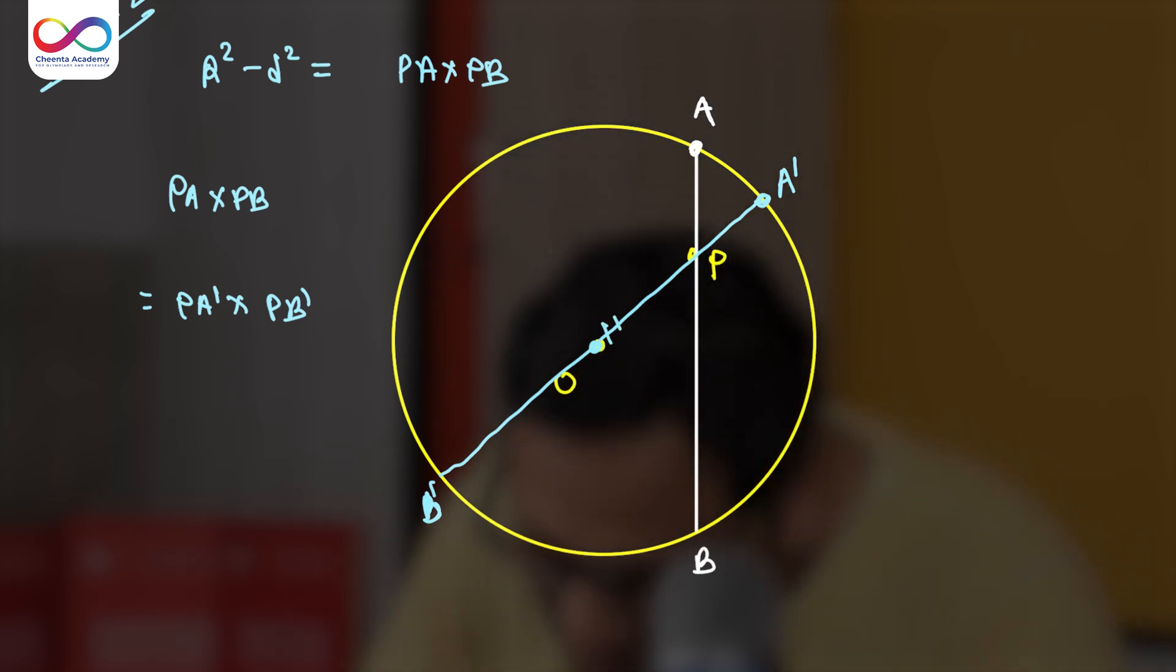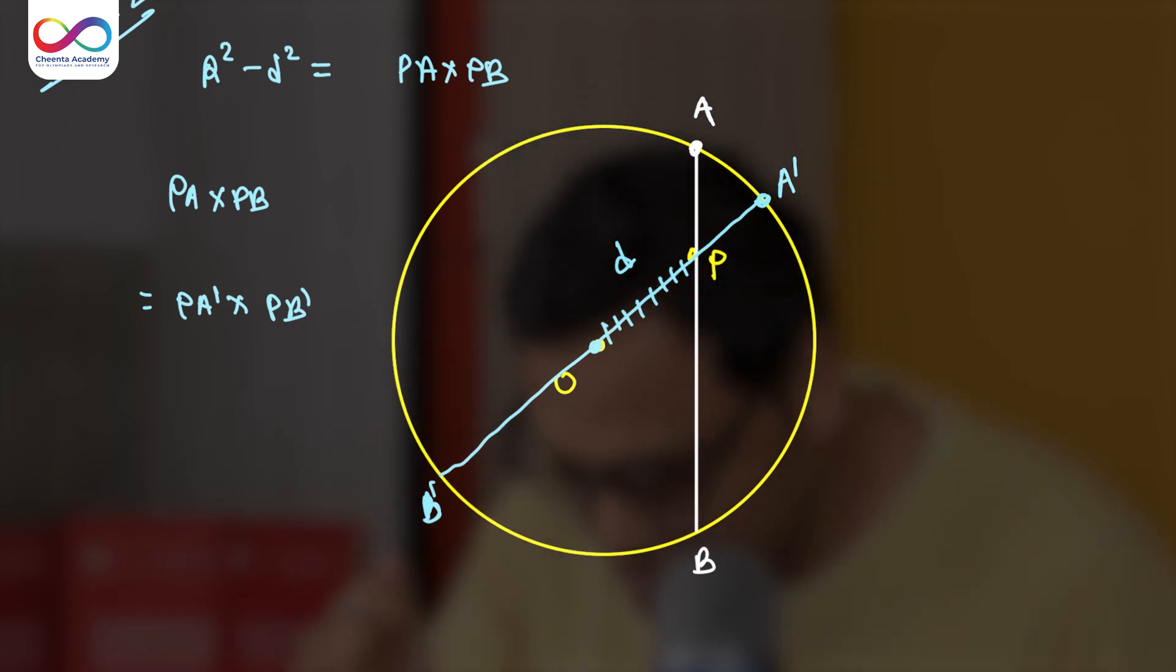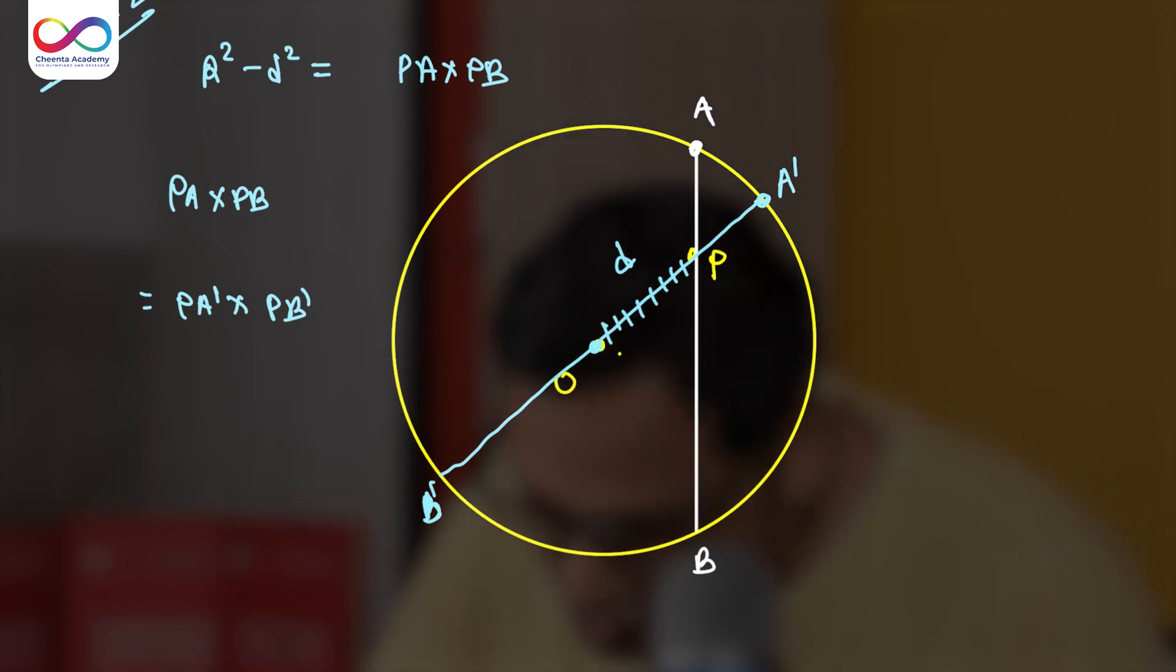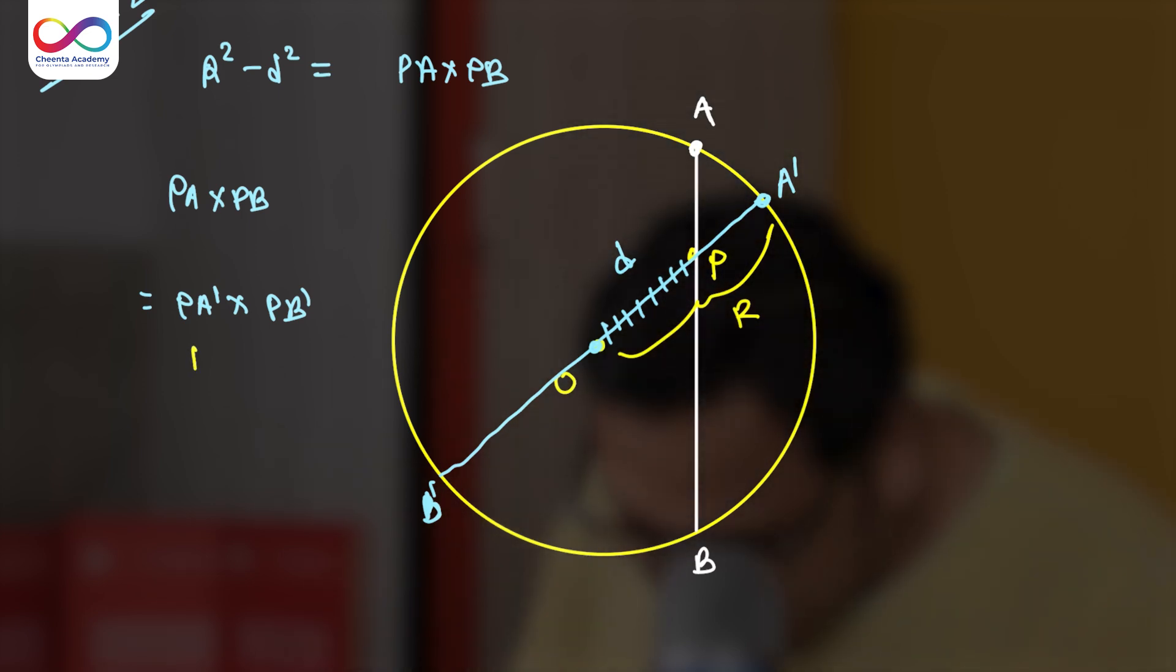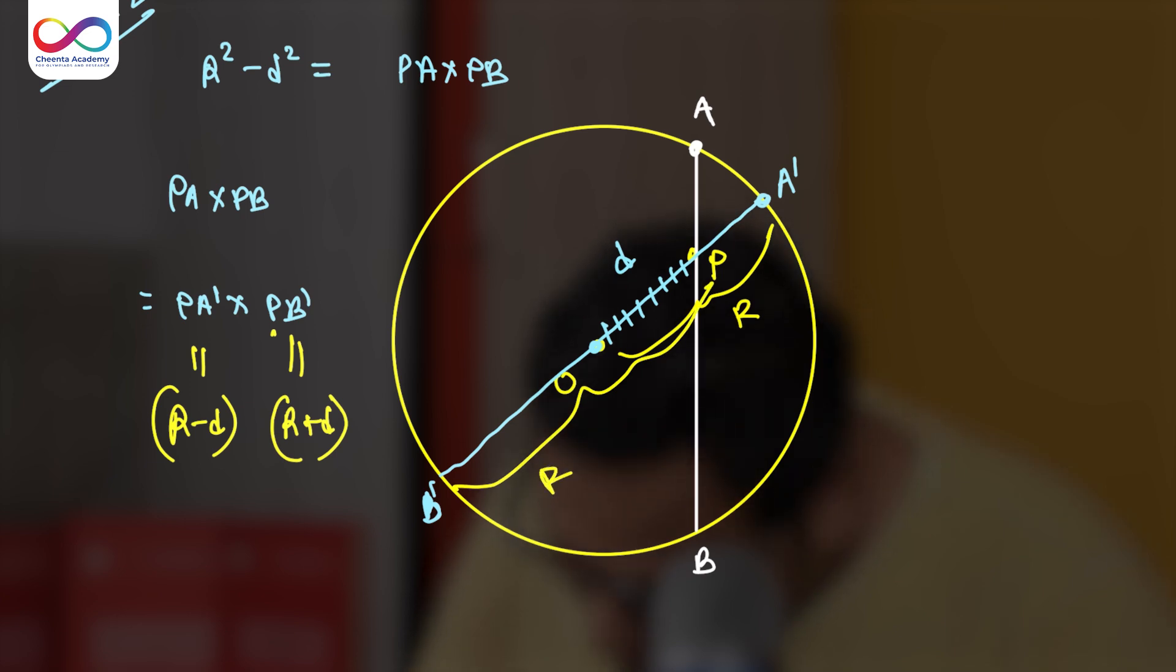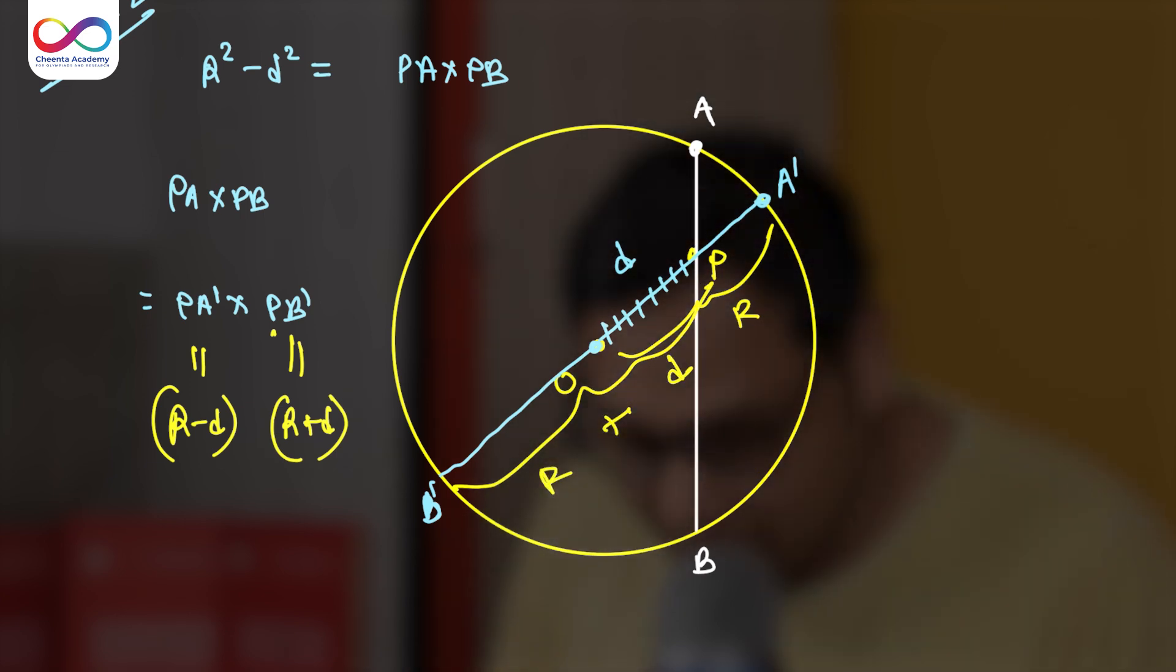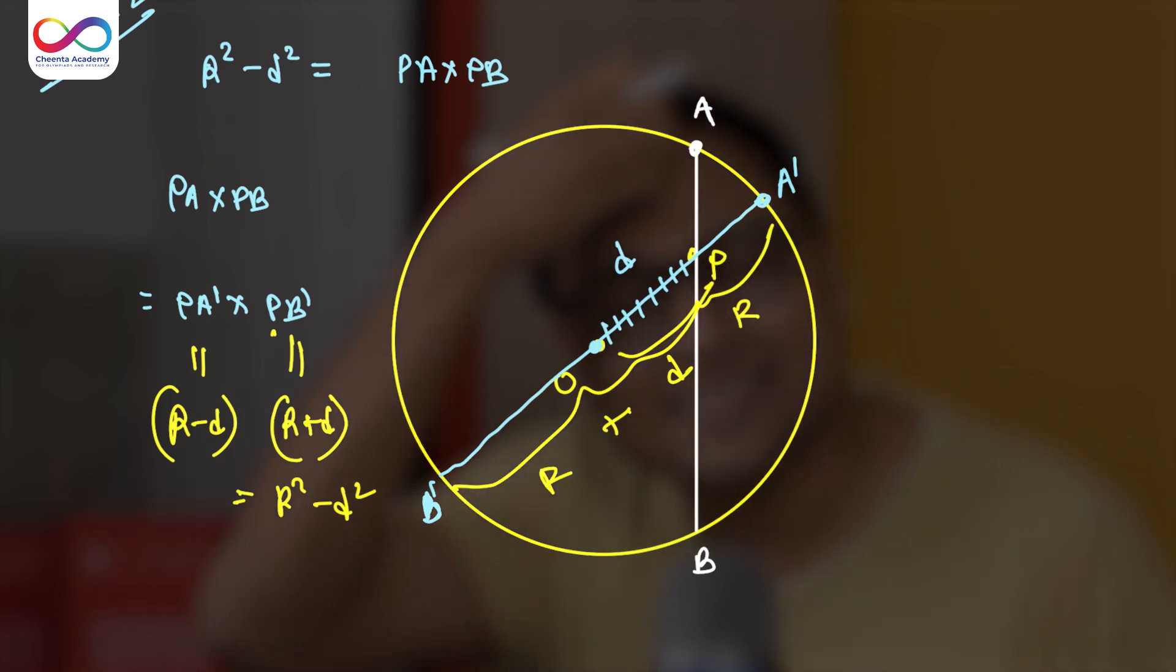And suppose this length is D, that's the distance of the point P from the origin. And this much is R, the radius of the circle. So what is PA'? PA' is R minus D and PB' is R plus D. PB' is R plus D and we are done. This is R² minus D². Fantastic, isn't it?